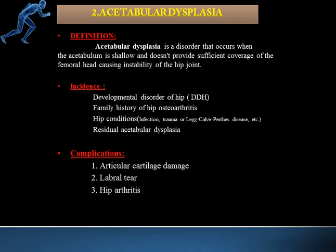This is also a childhood disorder and can occur in children who have a developmental disorder of the hip. It also occurs where there is a family history of osteoarthritis, osteoporosis, or childhood hip conditions like infection, trauma, or birth-related disease. Additionally, residual acetabular dysplasia can occur — meaning the dysplasia develops as a result of treatment for developmental hip disorder if the treatment technique was not correct.